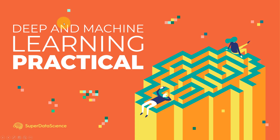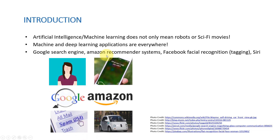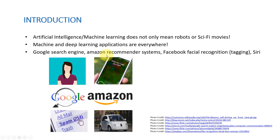Hello everyone and welcome to this lecture. In this lecture, I'm going to explain what is the difference between machine learning, deep learning, and artificial intelligence. Artificial intelligence and machine learning mainly does not only mean robots or sci-fi movies. In fact, all the machine learning and deep learning and AI are literally everywhere around us.